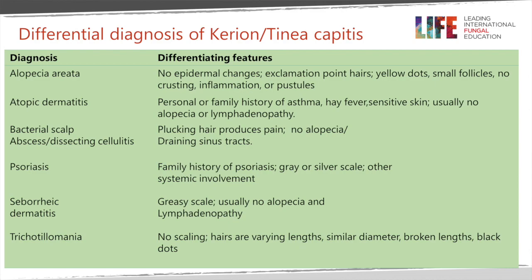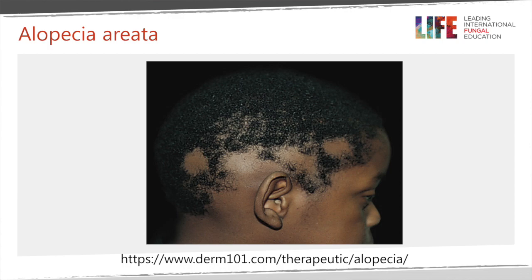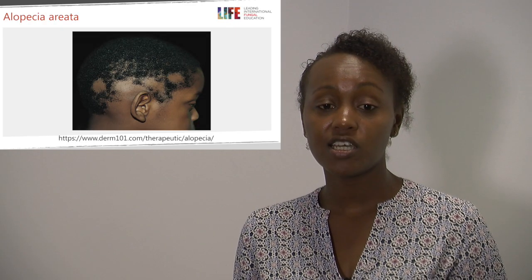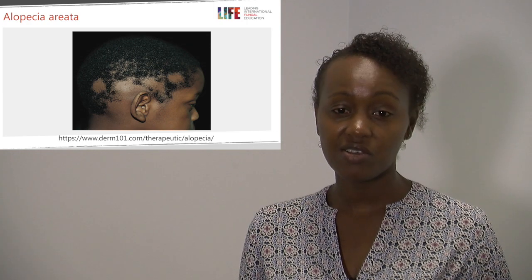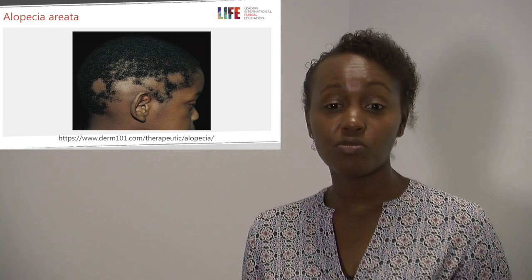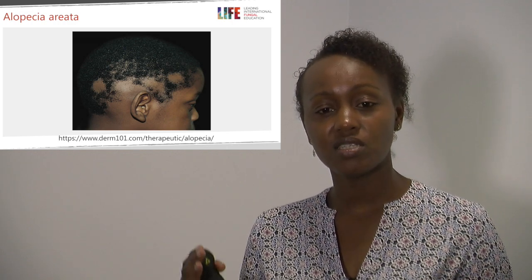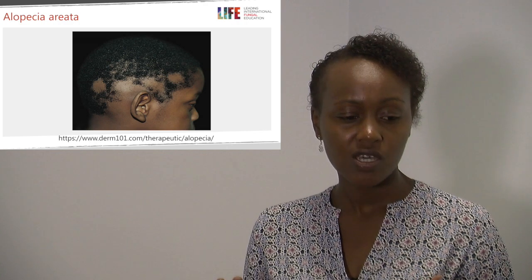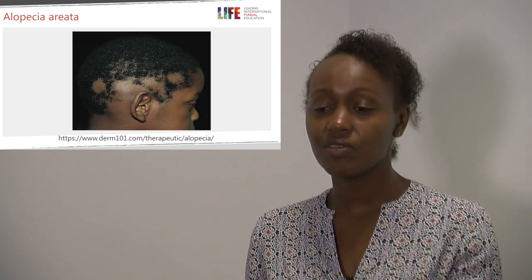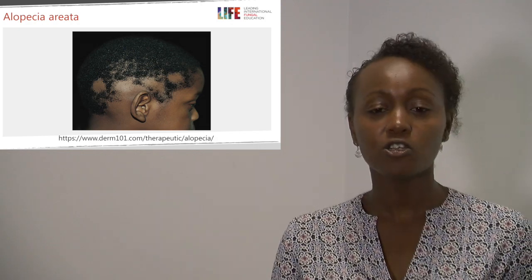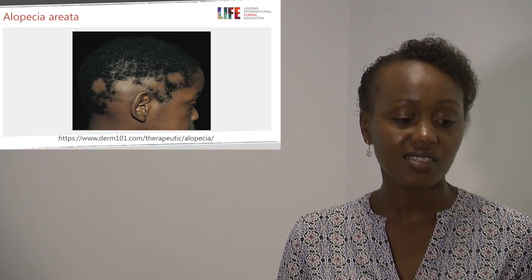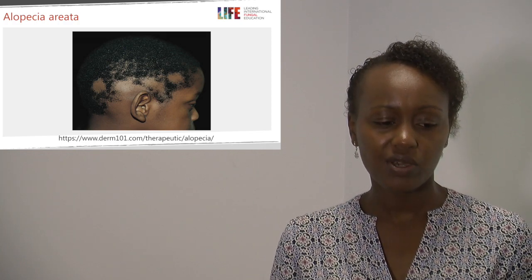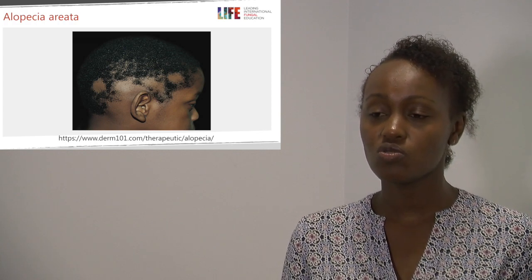Alopecia areata is high on the differential because it has a similar age of presentation to tinea capitis — in the preteen years. Alopecia areata is an autoimmune reaction where the immune system produces antibodies against parts of the hair follicles, leading to hair loss and resultant alopecia. A key distinguishing feature is that alopecia areata does not present with much scaling, unlike tinea capitis.